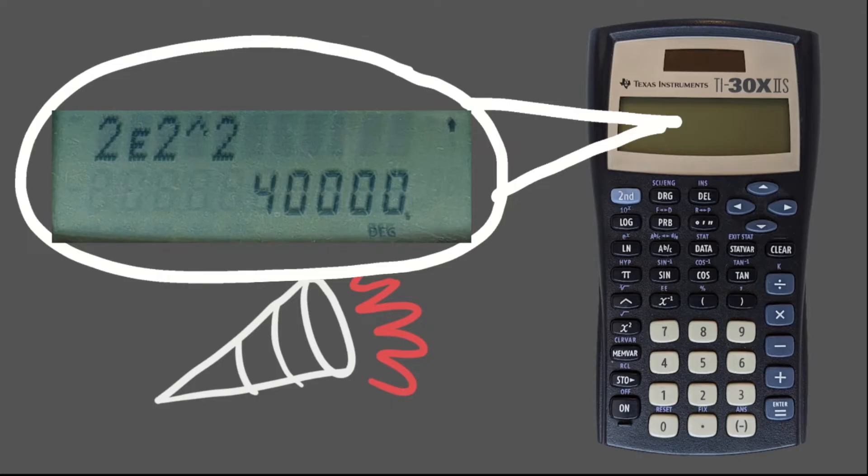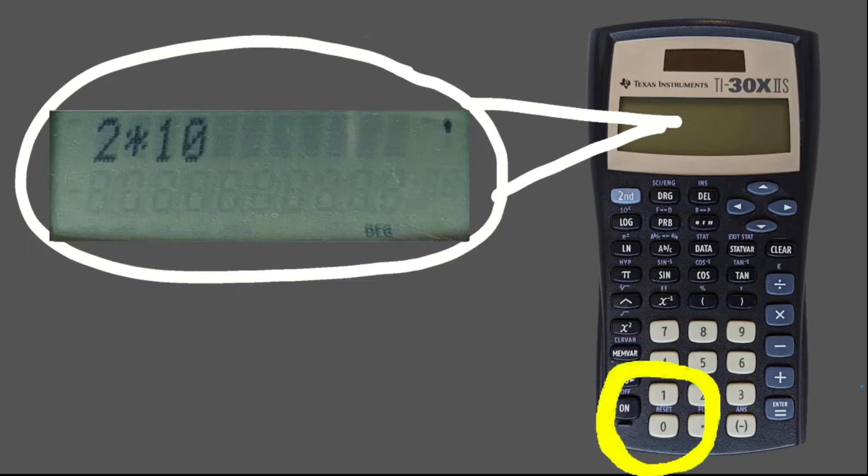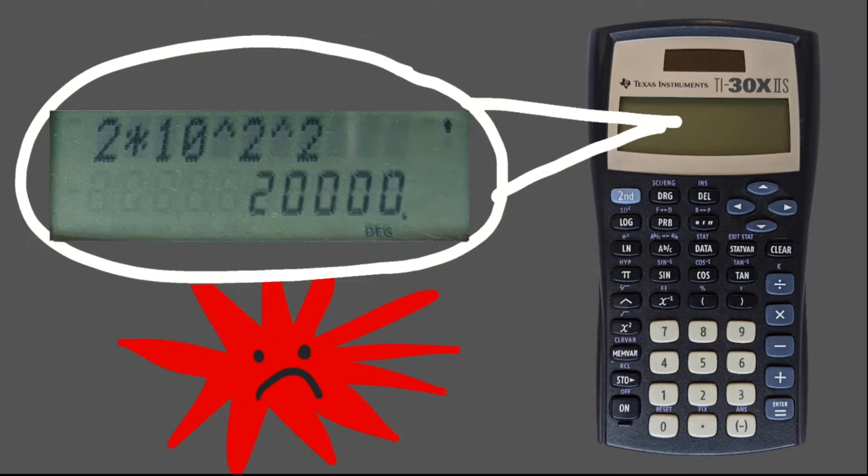Now, just for kicks, let's see what happens when we use the nasty times 10 to the expression, and forget to add parentheses, which, by the way, is just wasted time. Well, would you look at that? 20,000. This is terrible news, that is, if you aren't using EE.